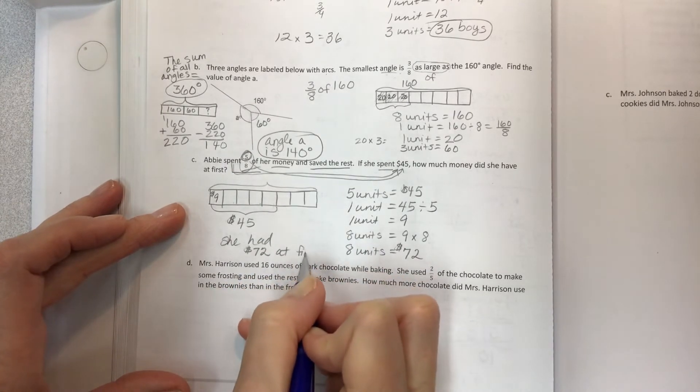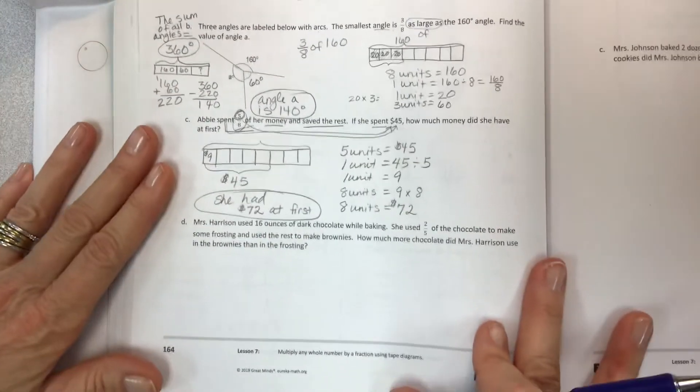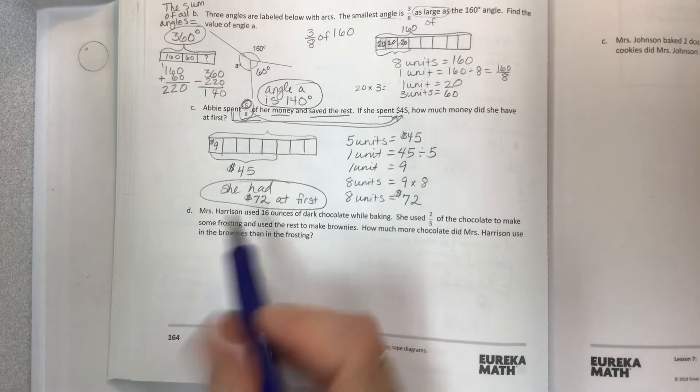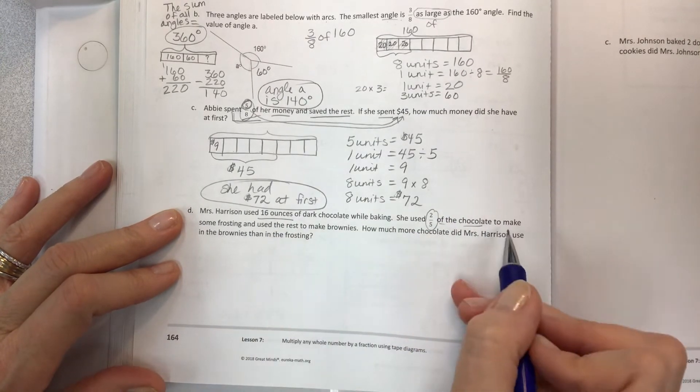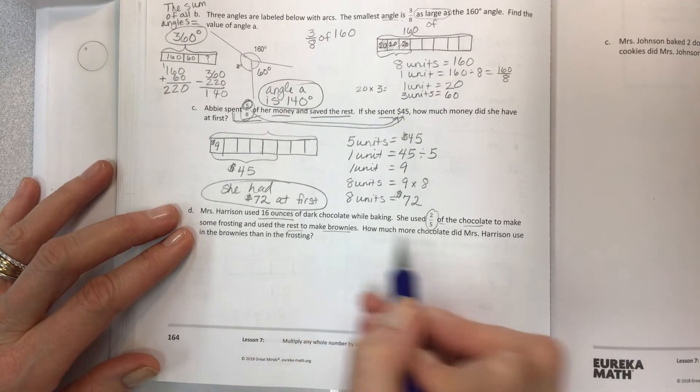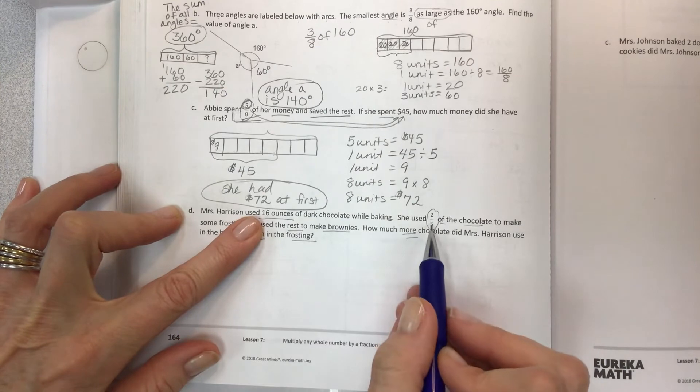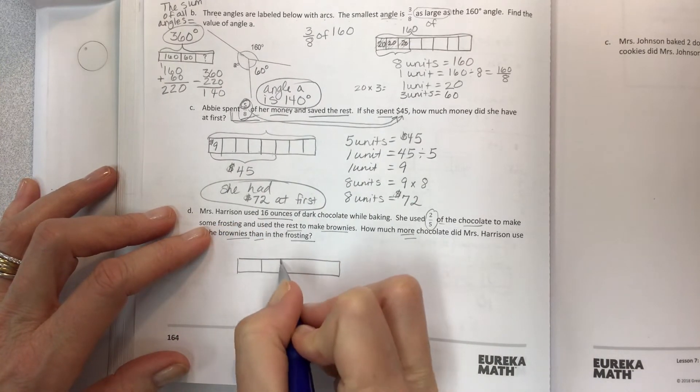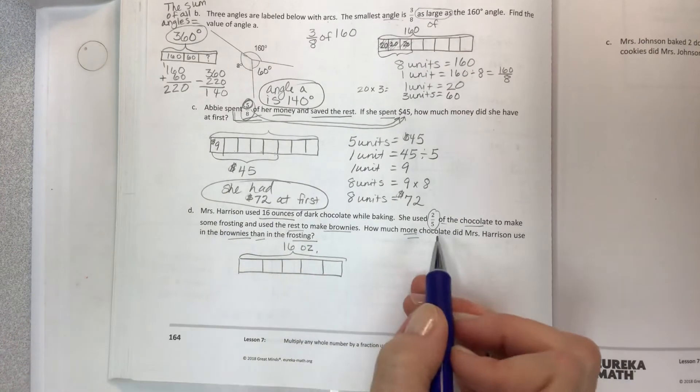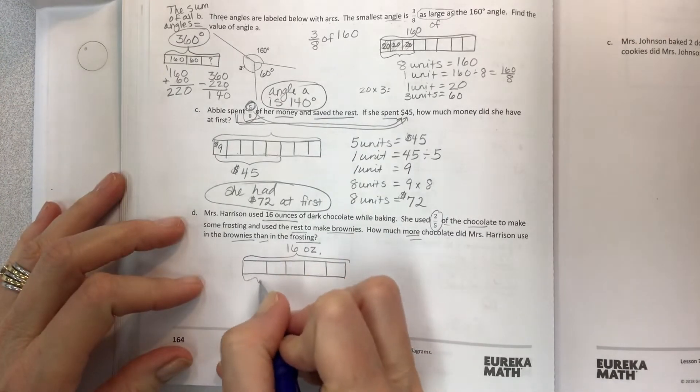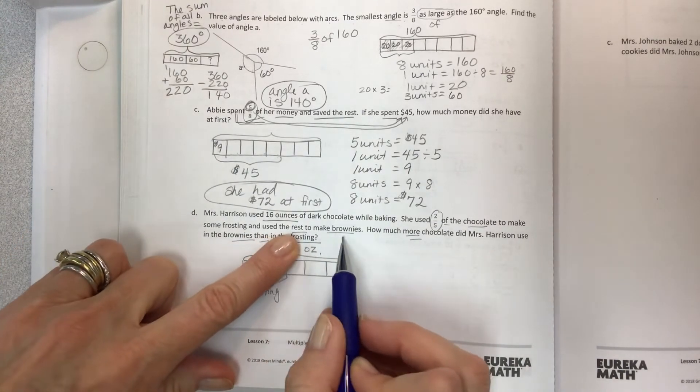Last one, huzzah. Mrs. Harrison used 16 ounces of dark chocolate while baking. She used two-fifths of the chocolate to make some frosting and used the rest to make brownies. How much more chocolate did she use in the brownies than in the frosting? Let's take our 16 ounces and divide it into the five sections. Tape diagram, 16 oz. She used two to make frosting. The rest to make brownies.